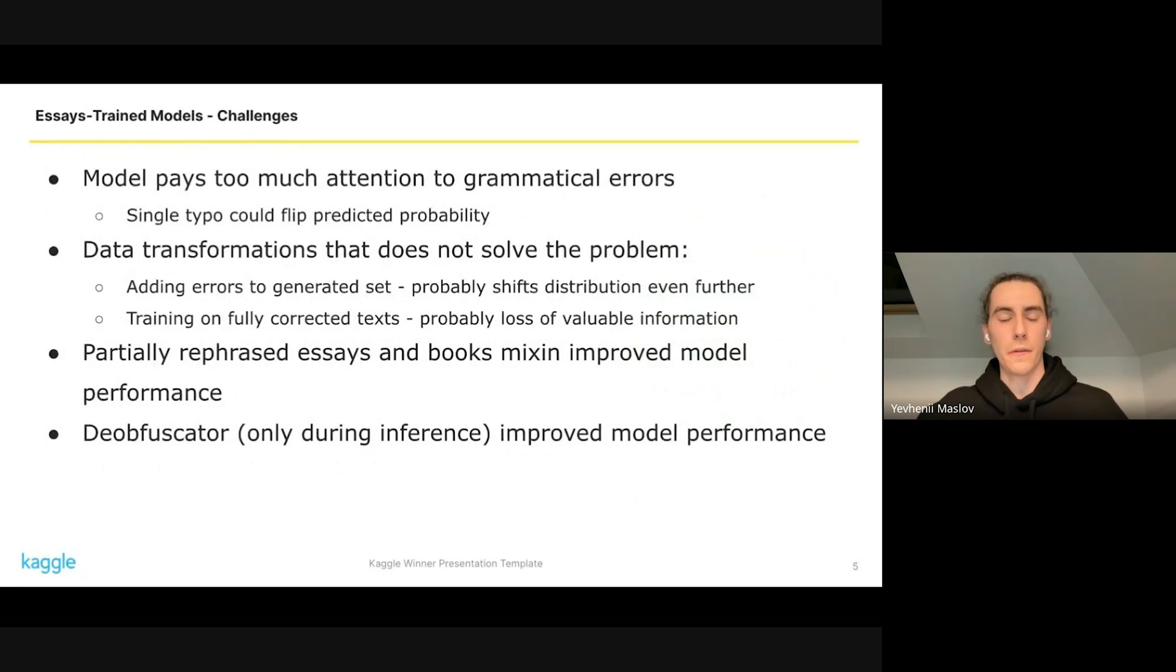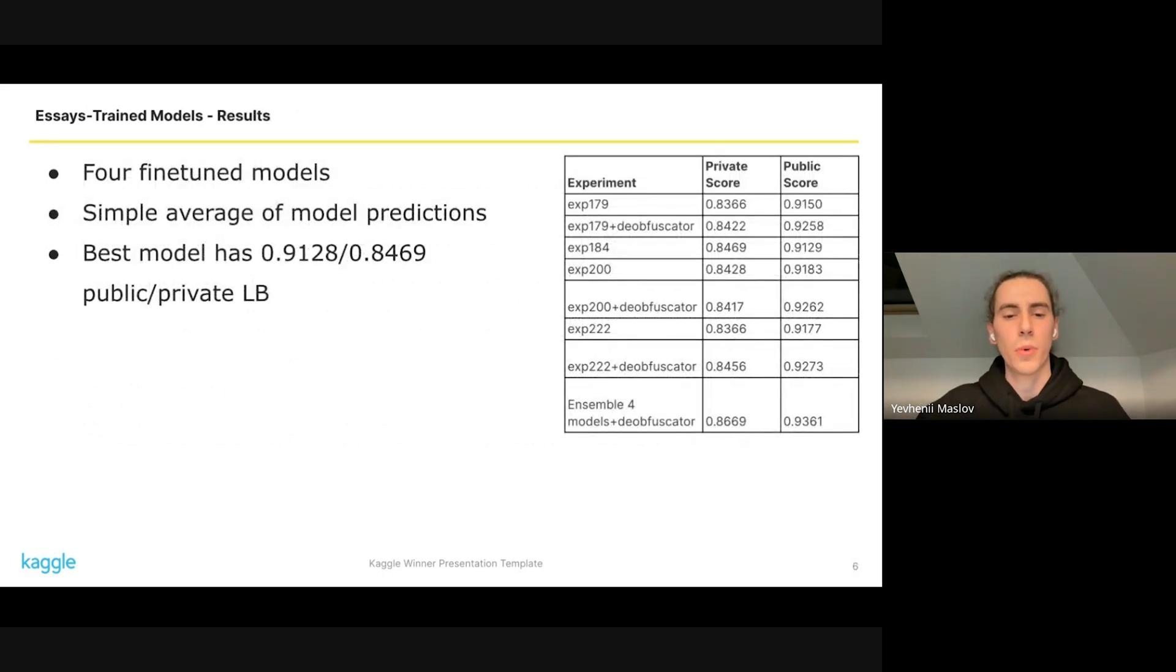The only three things that slightly improved our model were: partially rephrased essays when you keep the natural human typos in generated text, books or human-written text without any typos, and DeObfuscator during inference. We trained four models. The best single model had 0.846 private score and ensemble of four had 0.866 private score.